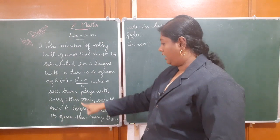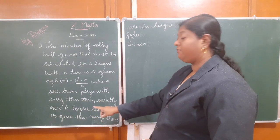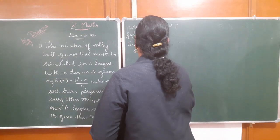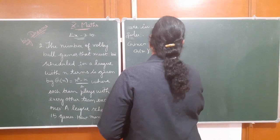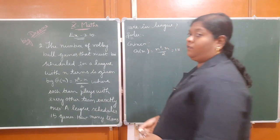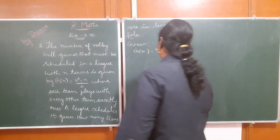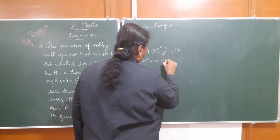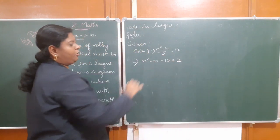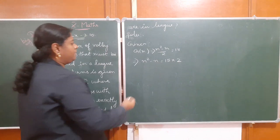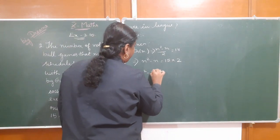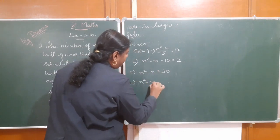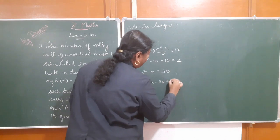We are given g(n) = (n² - n) / 2 = 15. So, multiplying both sides by 2: n² - n = 30. Rearranging: n² - n - 30 = 0.